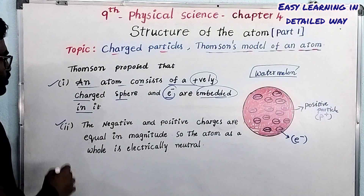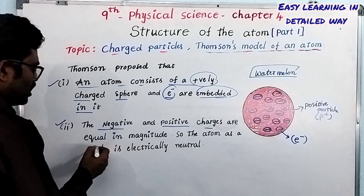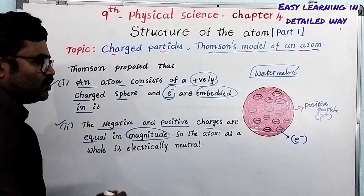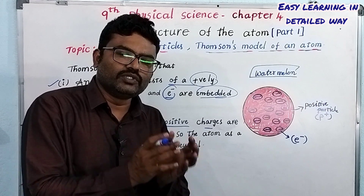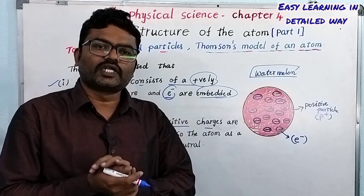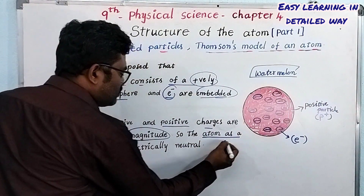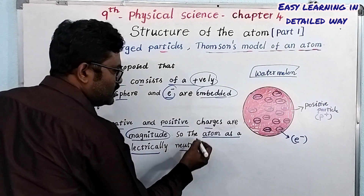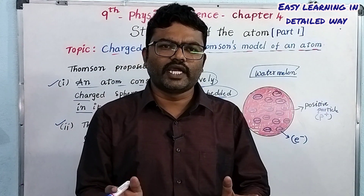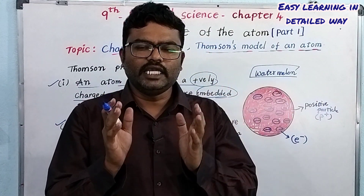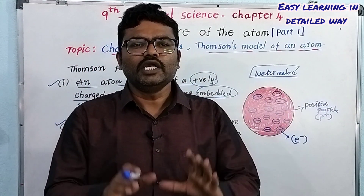The second proposal of Thomson's model is that the negative and positive charges are equal in magnitude. The magnitude of the proton's charge equals that of the electron, so the atom as a whole is electrically neutral. Because there are equal numbers of positive and negative charges, the overall atom is neutral.